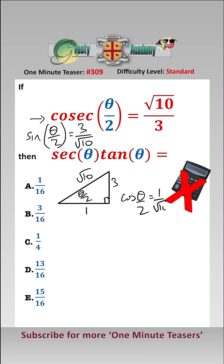just reading it off the triangle, is 1 over root 10. So therefore using the sine double angle, we have that sine theta is 2 times cos theta over 2 times sine theta over 2, which equals 6 over 10.